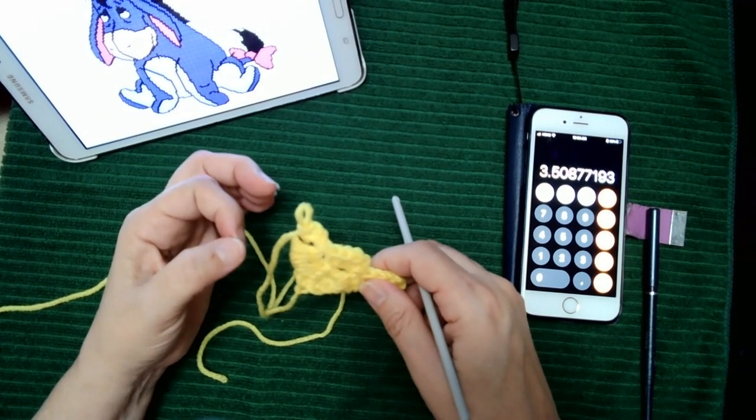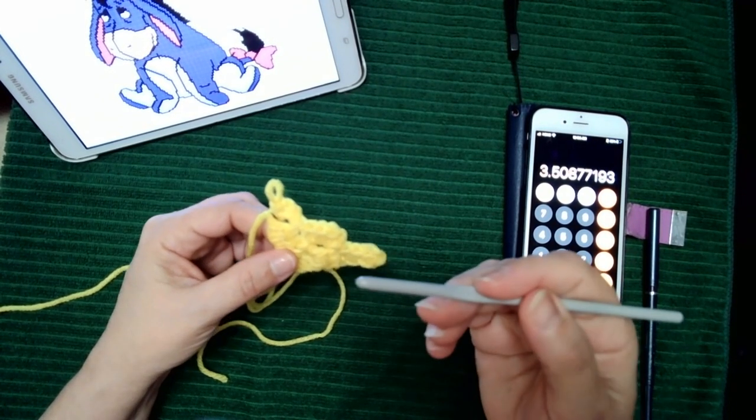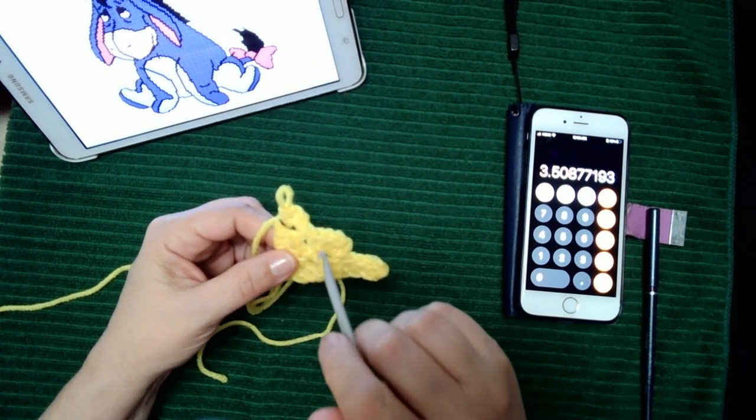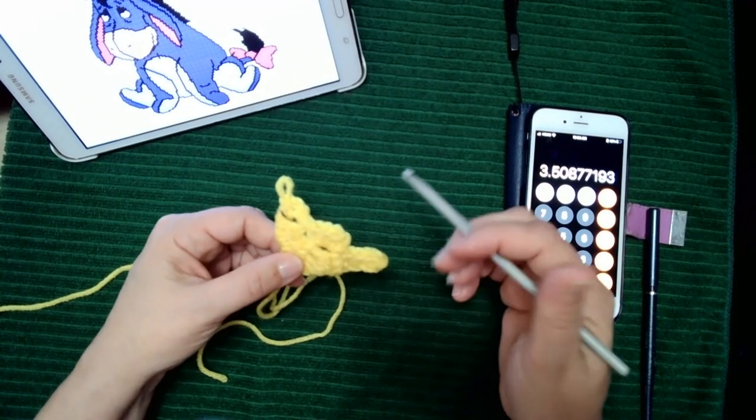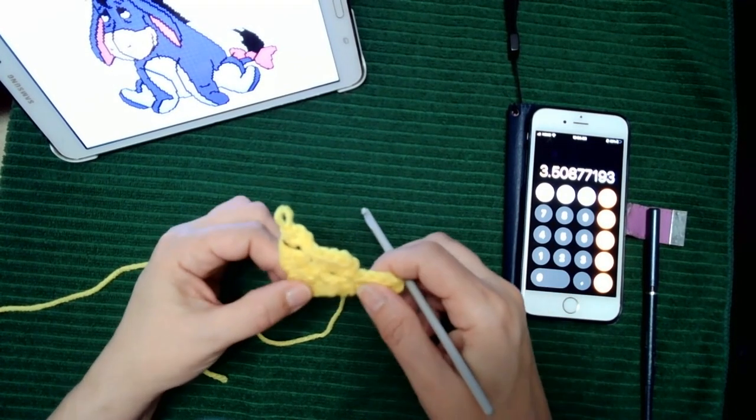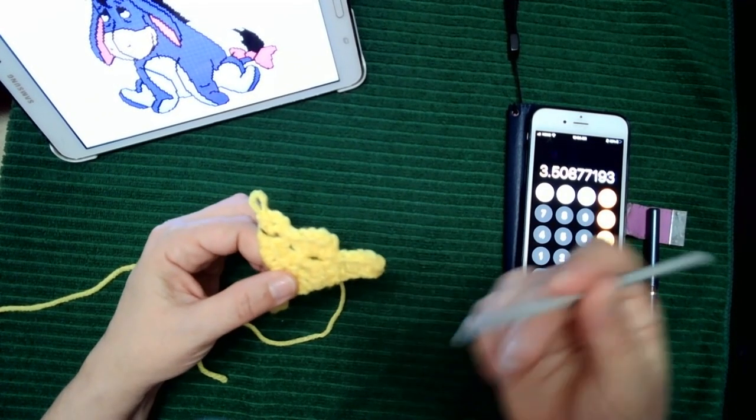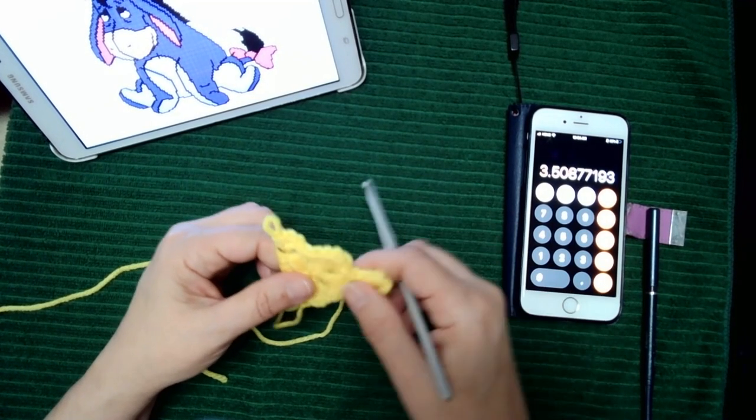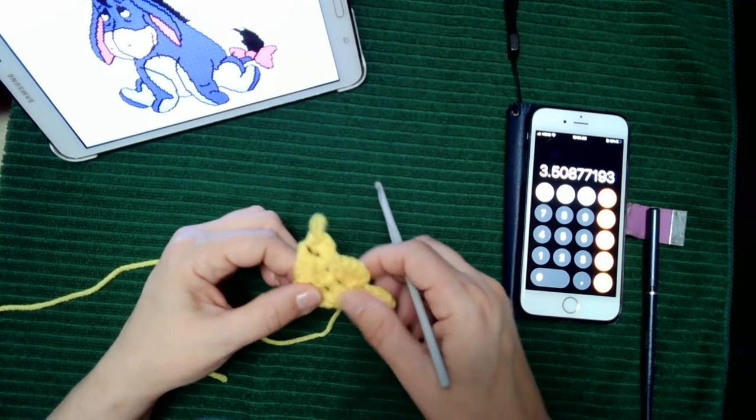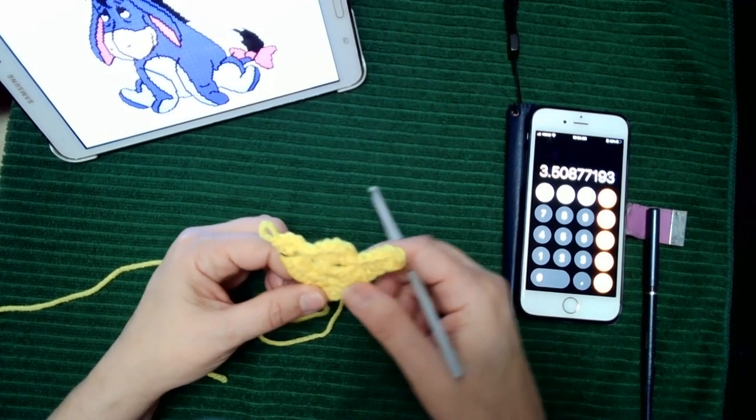Because everybody stitches differently and it's different with the hook size that you use, it's different with the yarn that you use. So if you do this at the beginning with the type of yarn you're going to use and you've established the gauge that you need to work with and give it a couple tries with different size hooks depending on what you want to use, it's been pretty good for me in the way of accuracy.